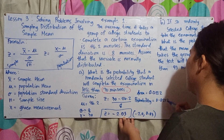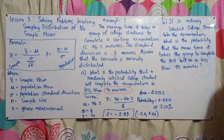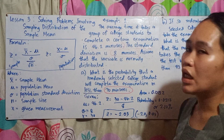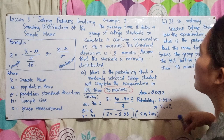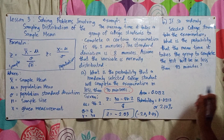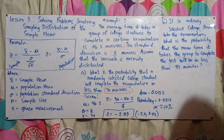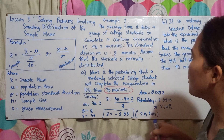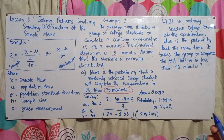The probability is 0.0212 or 2.12%. This is almost the same process as the previous lesson. For the final conclusion: the probability that a randomly selected college student will complete the examination in less than 30 minutes is 0.0212 or 2.12%.